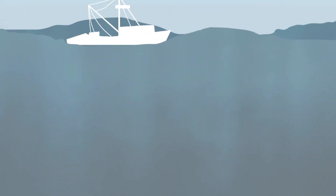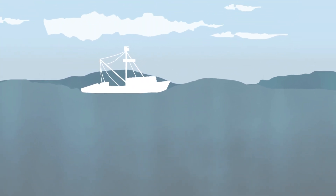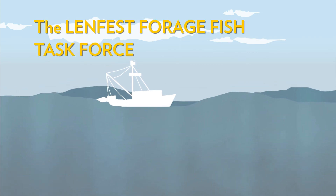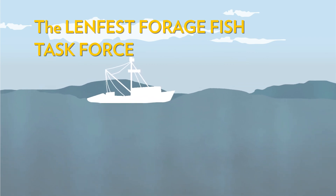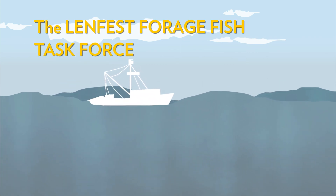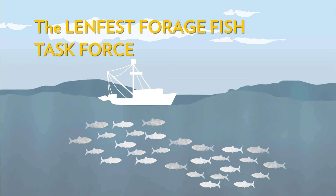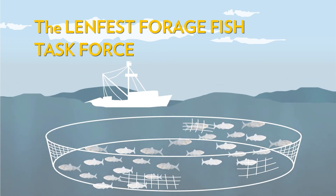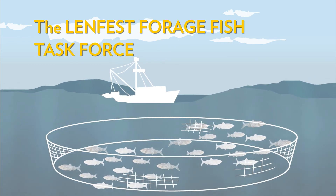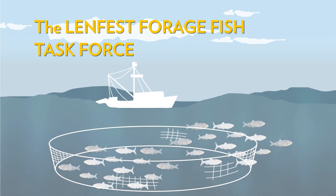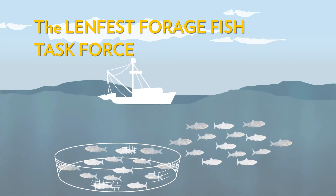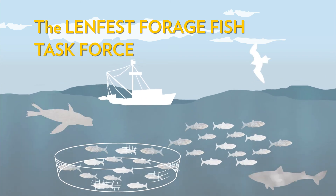Even when predators can't be included in a model, fisheries managers can still take them into account. The Lenfest Forage Fish Task Force recommends that when a predator-prey relationship is unclear, fishing on the prey species should be reduced by 50% or more compared to conventional levels to help protect both predators and prey.